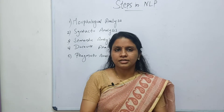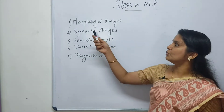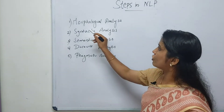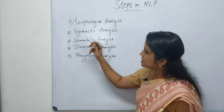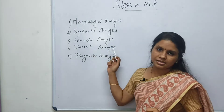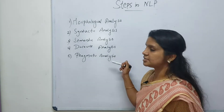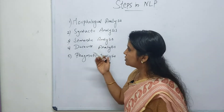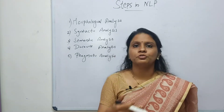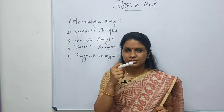Between this input and output, what are the various steps carried out by the NLP system for processing the text? These steps can be categorized into five total: first is morphological analysis, second is syntactic analysis, third is semantic analysis, fourth is discourse analysis, and fifth is pragmatic analysis. Let's discuss each one by one.